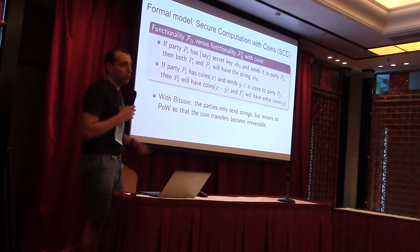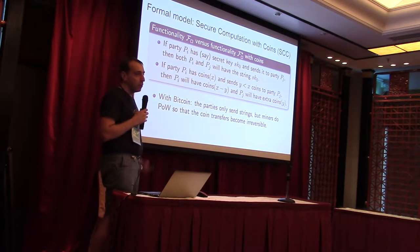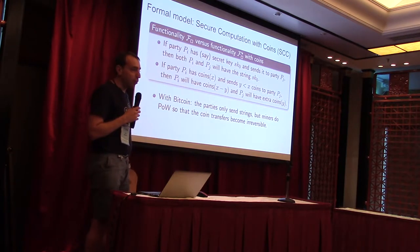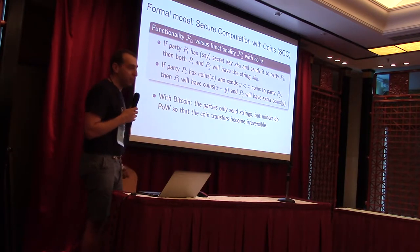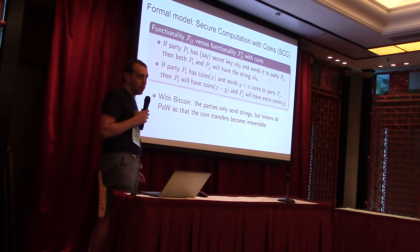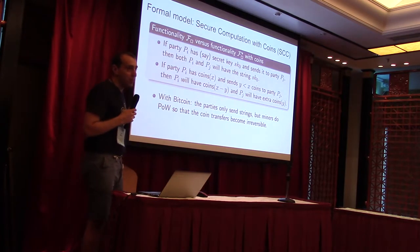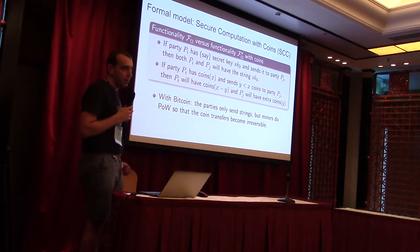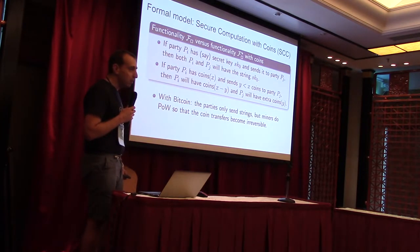We also want computation with money. The difference between money and data: if Alice has some secret and sends it to Bob, then both Alice and Bob have the secret. But if Alice has coins and sends them to Bob, then Bob has the coins and Alice doesn't anymore — that is the difference.